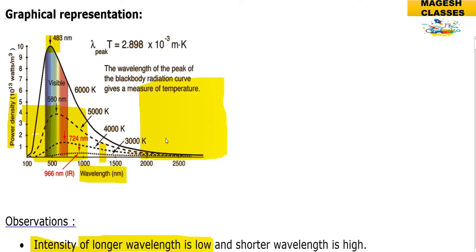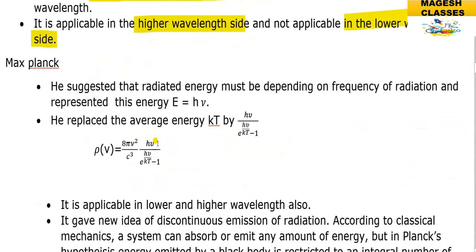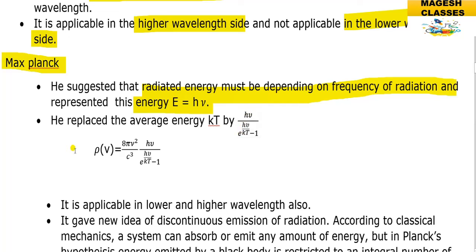The two laws are contrary: Wien's displacement law explains the lower wavelength side while Rayleigh-Jeans explains the higher wavelength side. Max Planck, the pioneer of quantum chemistry, suggested that radiation energy must depend on the frequency of radiation, represented as E = hν. In Planck's formula, kT is replaced by hν/(e^(hν/kT) − 1), which explains both regions.